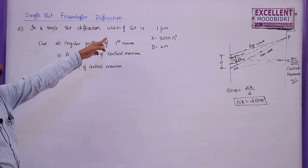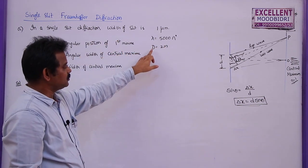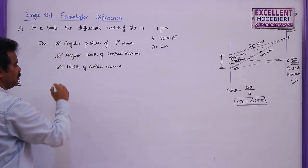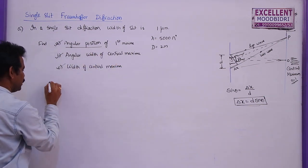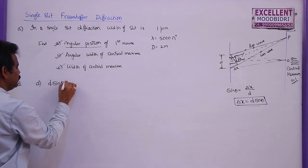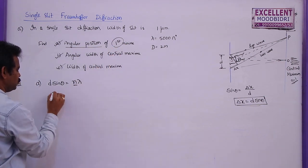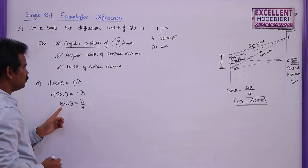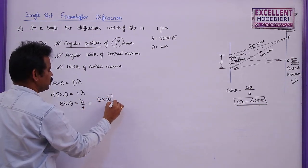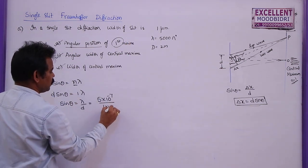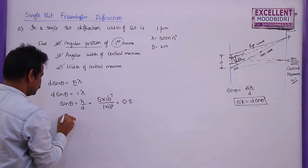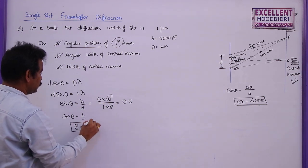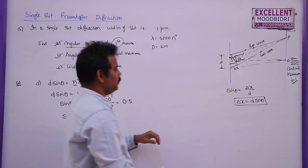Numerical problem: In a single slit diffraction, width of slit d = 1 micrometer, wavelength λ = 5000 angstroms = 5 × 10⁻⁷ m, and distance between slit and screen D = 2 m. Find the angular position of the first minima. Using the condition d sin θ = Nλ, for first minima N = 1: sin θ = λ / d = (5 × 10⁻⁷) / (10⁻⁶) = 0.5. Therefore θ = 30 degrees.